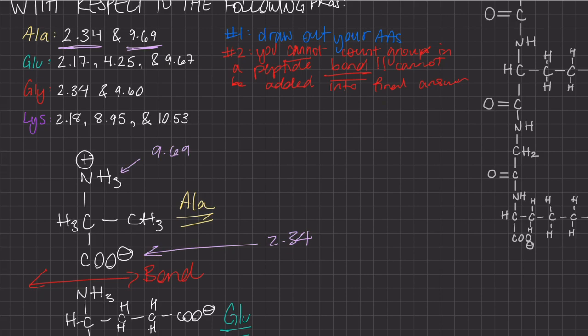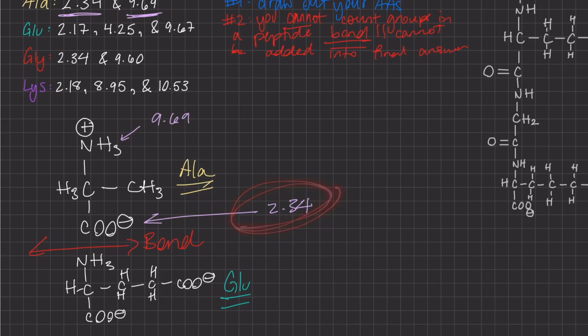So let's apply it to our problem here. The carboxylic acid subgroup on alanine will not be included. Why? Because it is forming the peptide bond with glutamate.